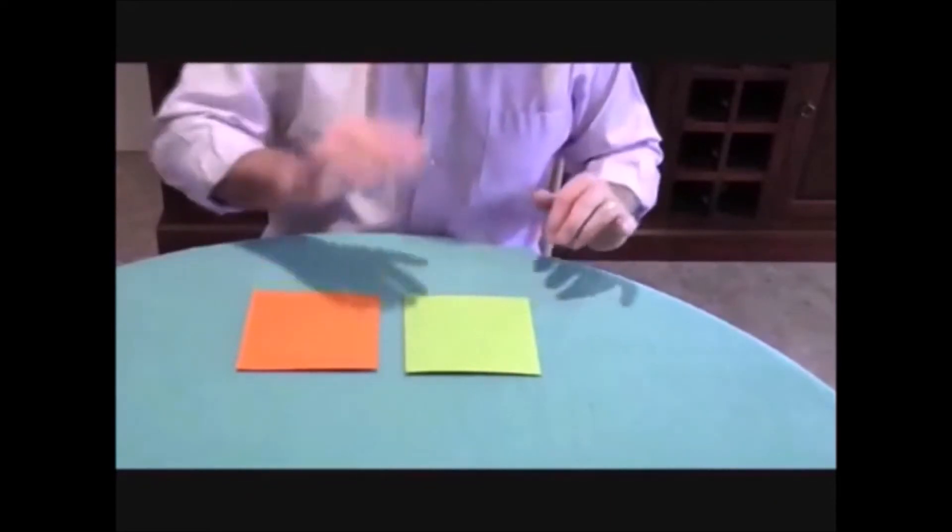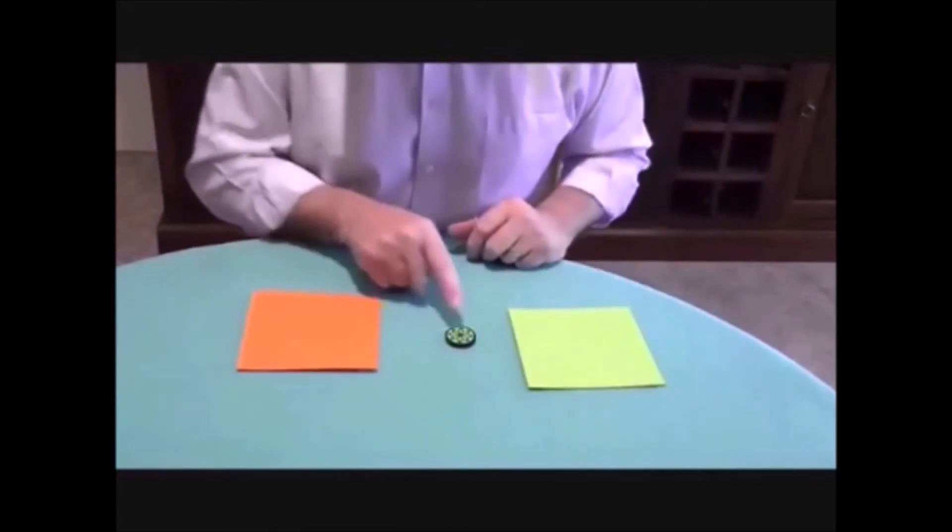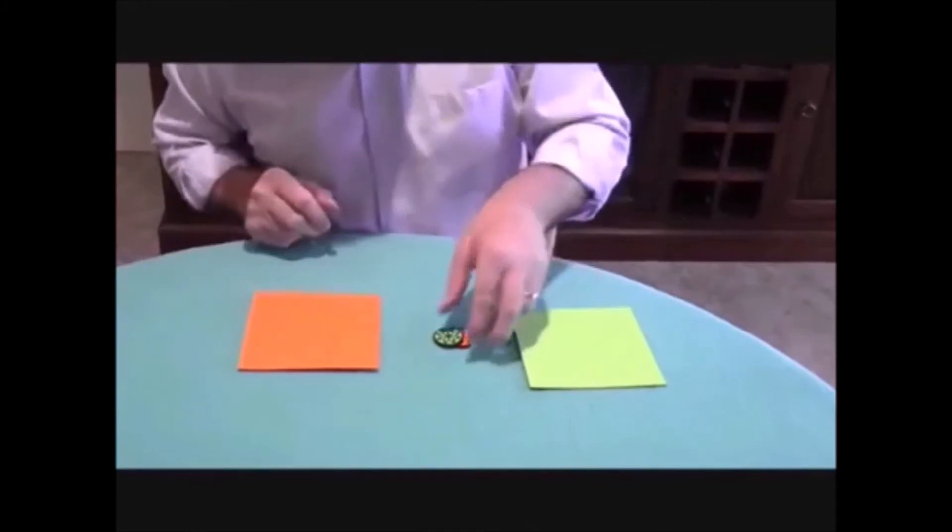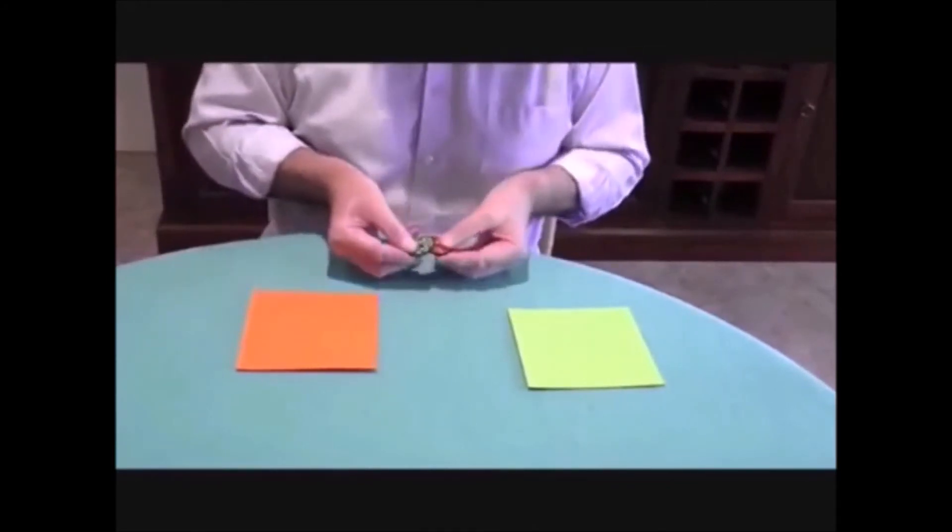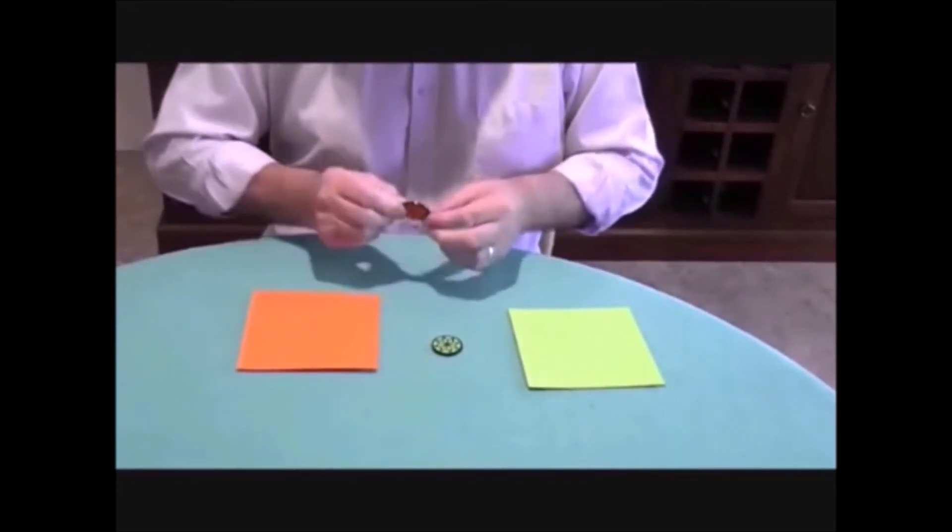So all we need to do is a click here, a click there, take the green sheet away. We've got one green poker chip there but underneath there is an orange chip. So now instead of two green we've got one green and one orange poker chip.